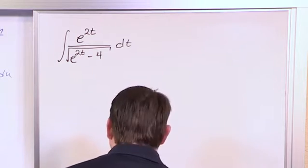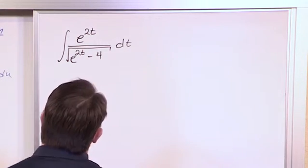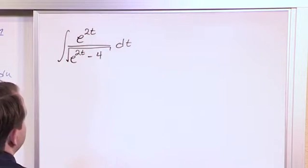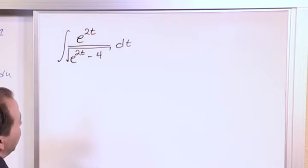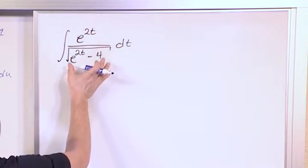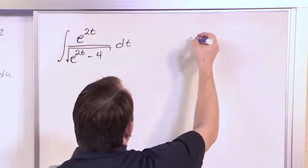What we want to do is figure out a substitution that's going to simplify this. Kind of as a first cut, usually when I see radicals, I like to pick u for what's under the radical because then everything in the radical becomes much easier to look at.